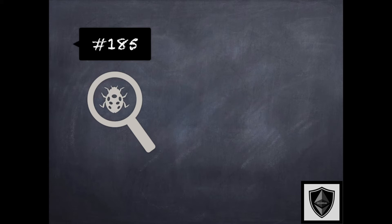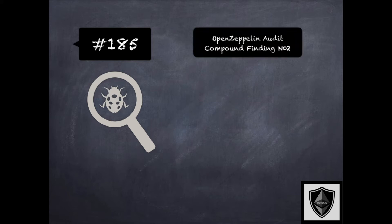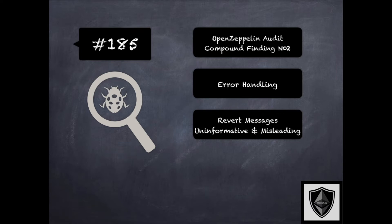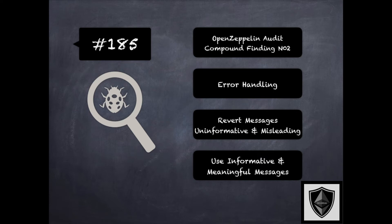Finding 185 is a finding from OpenZeppelin's audit of Compound, where the concern was about misleading revert messages. Error messages are intended to notify users about failing conditions and should provide enough information so that appropriate corrections needed to interact with the system can be applied. Uninformative error messages affect user experience. The recommendation was to consider reviewing the code base to make sure error messages were informative and meaningful and also reuse error messages for similar conditions. This is related to error reporting issues in 175, clarity issues in 188, and principle of psychological acceptability in 199 of the security pitfalls and best practices 201 module.